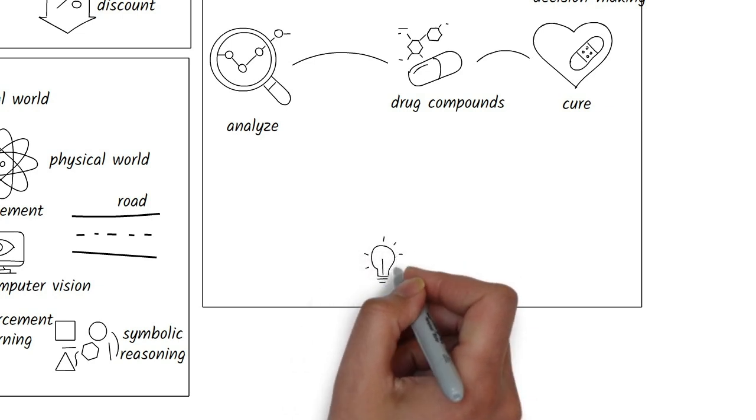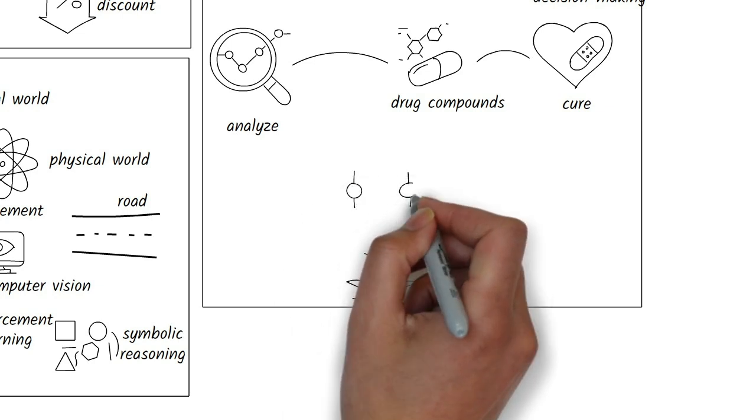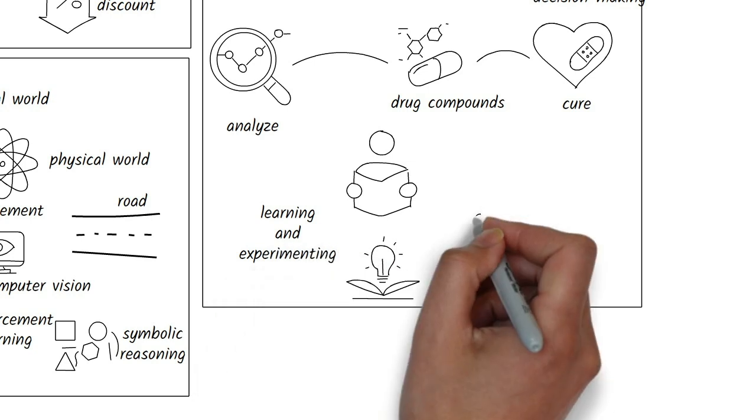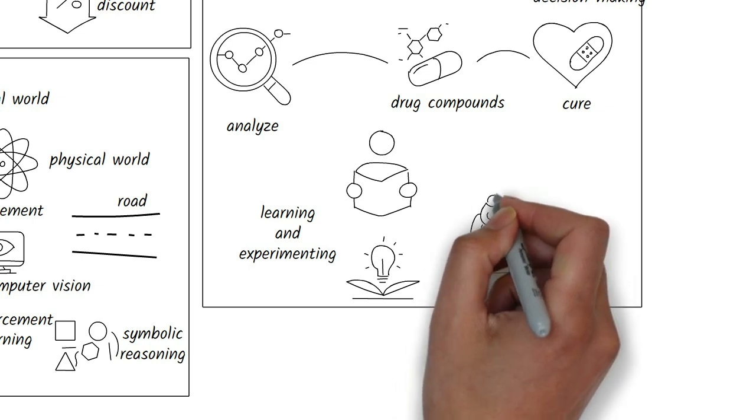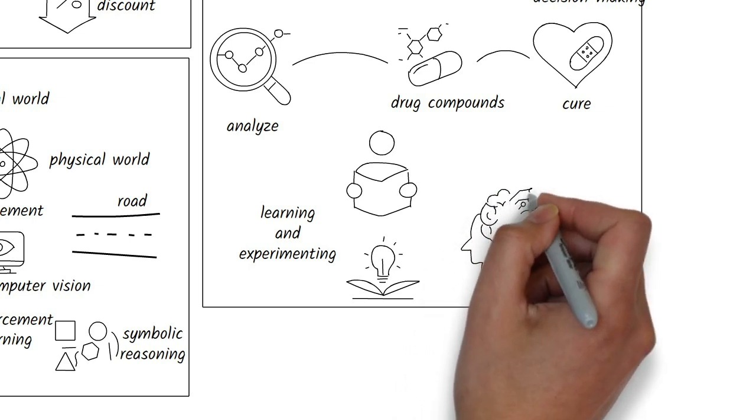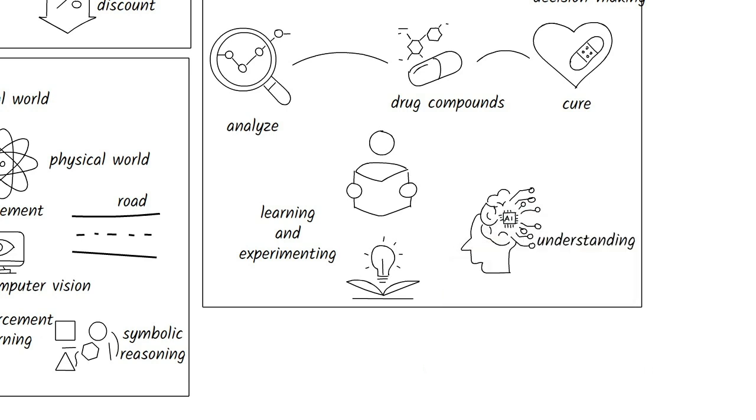With all this going on, how can you stay ahead? The best thing you can do is to continue learning how AI works, experiment with tools, and stay informed. AI can help you work smarter. AI literacy is as important as digital literacy. Understanding AI will be a key skill for the future.